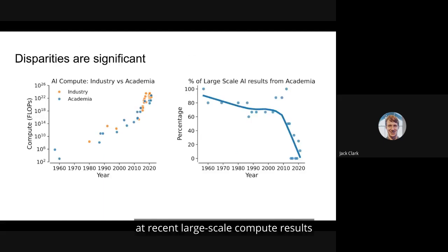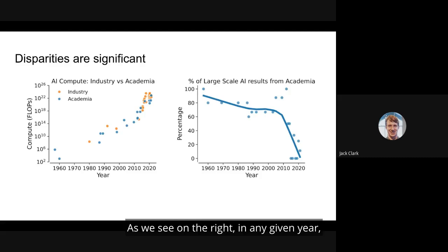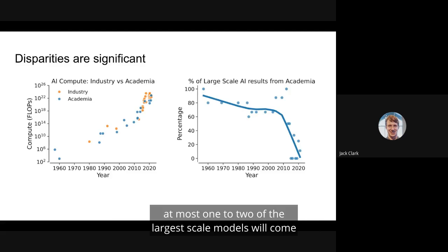We illustrate this by looking at recent large-scale compute results and just break out what proportion of them come from industry versus academia. And what you see here is, over time, the proportion of results coming from industry has substantially increased. That makes sense, given the motivations that we've discussed above and the barriers to entry. But it's still a drastic and important trend. As we see on the right, in any given year, the percentage of large-scale AI results from academia has dwindled to now be close to 0%. Basically that means in a given year, at most one to two of the largest scale models will come from academia and everything else will come from industry. And that's just what's been publicly disclosed. We obviously know that industry develops even larger private models for more commercial purposes.